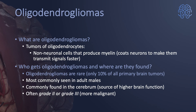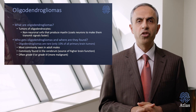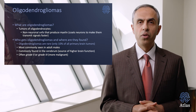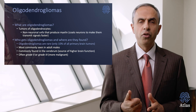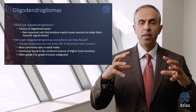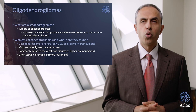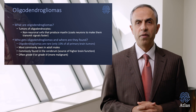The last major class of gliomas is oligodendrogliomas. These are tumors of oligodendrocytes — non-neuronal cells that produce the myelin coating that covers each neuron, enabling signal transmission across different regions of the brain. Oligodendrogliomas most often occur in young adult males and are commonly found in the cerebral cortex — the outer sections of the brain responsible for higher function, impulse control, and personality.